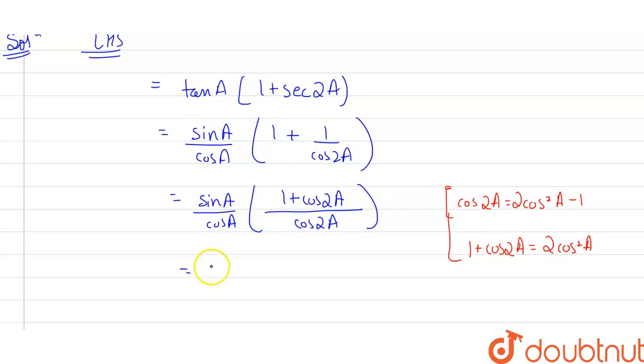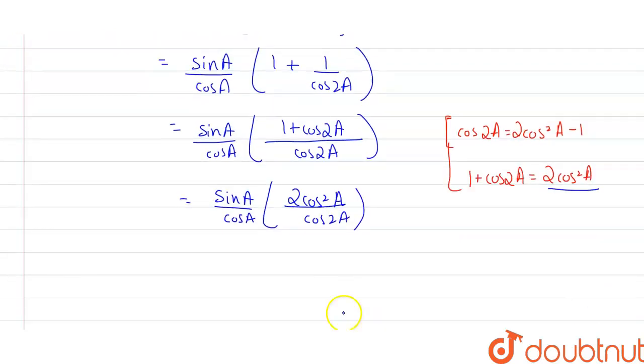So sin A by cos A, 1 plus cos 2A can be written as 2 cos² A divided by cos of 2A. Moving further I can write this as, you guys can clearly see this cos A having power 2 is cancelling out with each other.